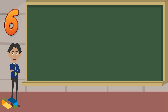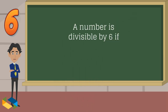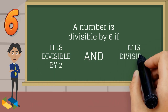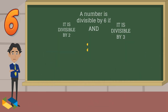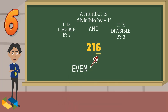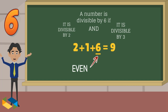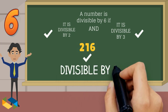The divisibility rule for 6 states that a number is divisible by 6 if it is divisible by both 2 and 3. In 216, for example, the last digit is even and the sum of its digits is 9, so it meets the divisibility rules for both 2 and 3. Hence, 216 is divisible by 6.